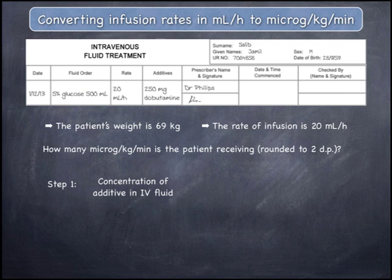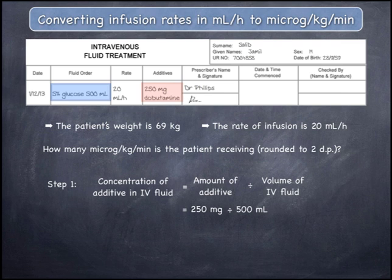Both of these quantities can be read from the order. The concentration is equal to the amount of dobutamine divided by the volume of the IV fluid, which is 250 milligrams divided by 500 mLs, which gives 0.5 milligrams per mL.